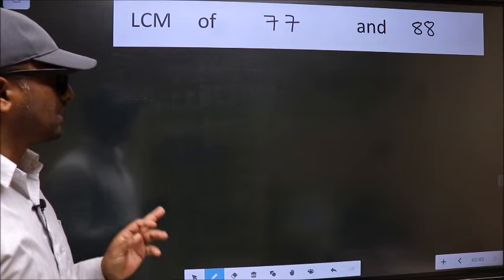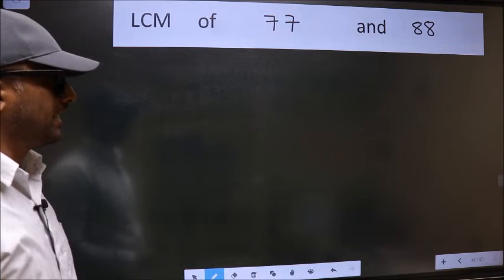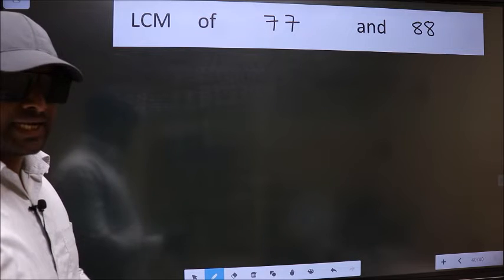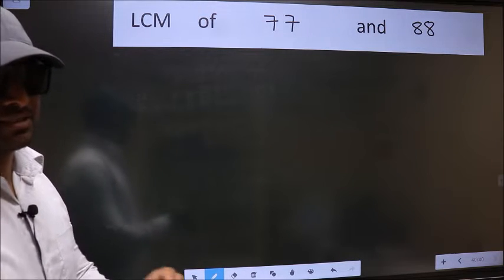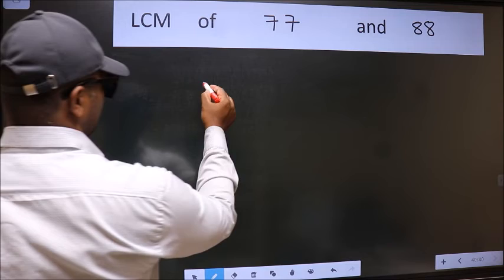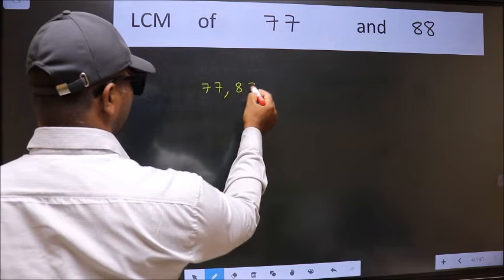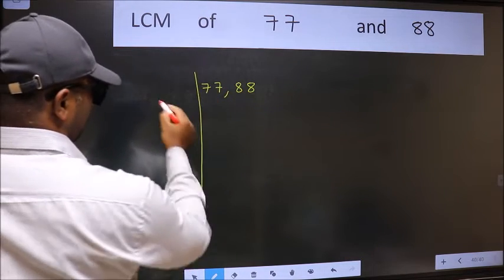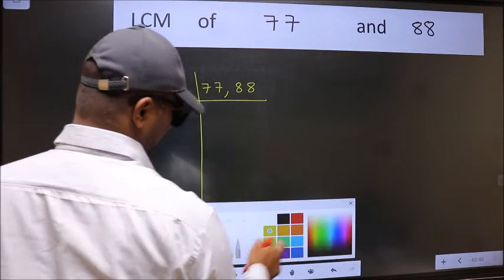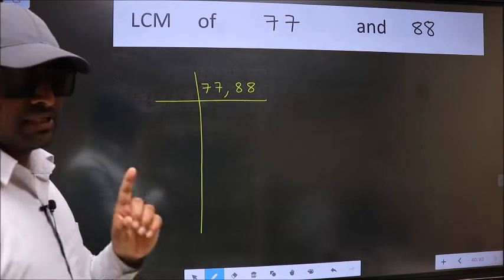LCM of 77 and 88. To find the LCM, we should frame it in this way: 77, 88. This is your step 1.